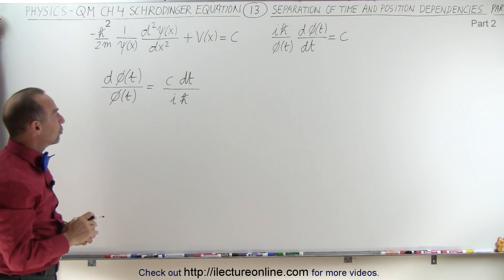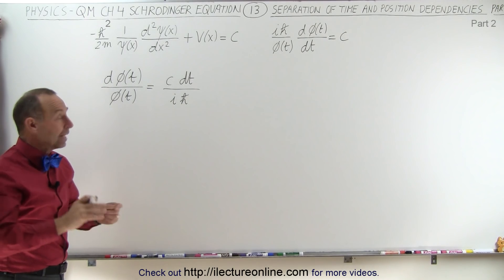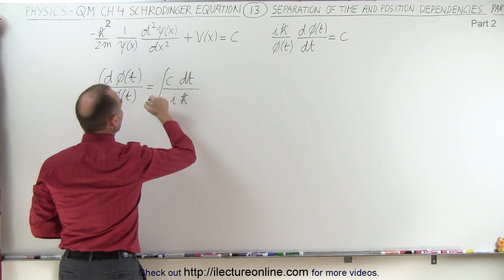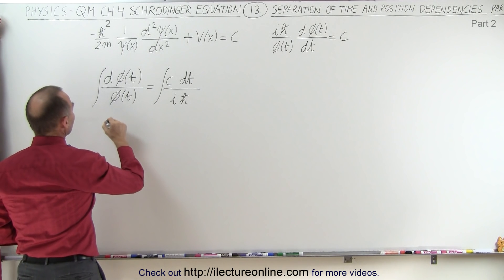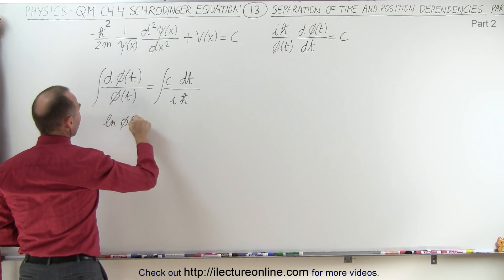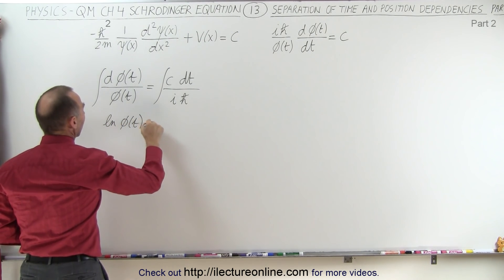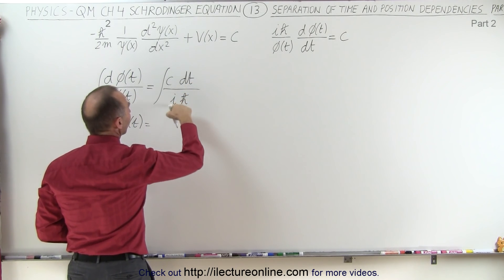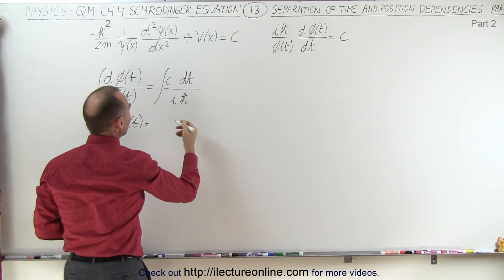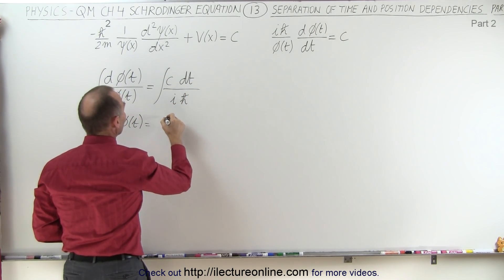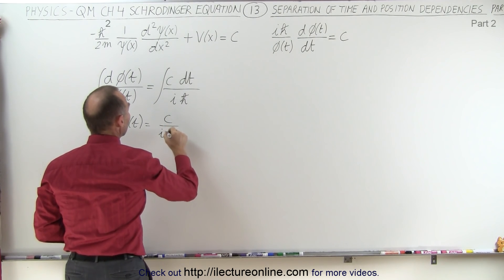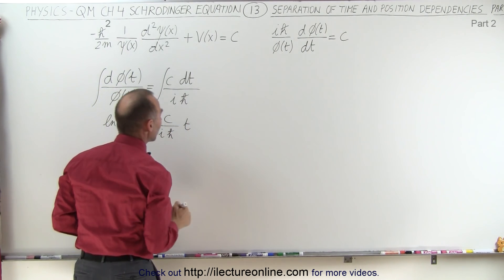Next, what we can do is integrate both sides. If we do that, on the left side we're going to get the natural log of that wave function. And on the right side, this will simply be t, because c, i, and h-bar are simply constants, so we end up with c divided by i·h-bar times t.